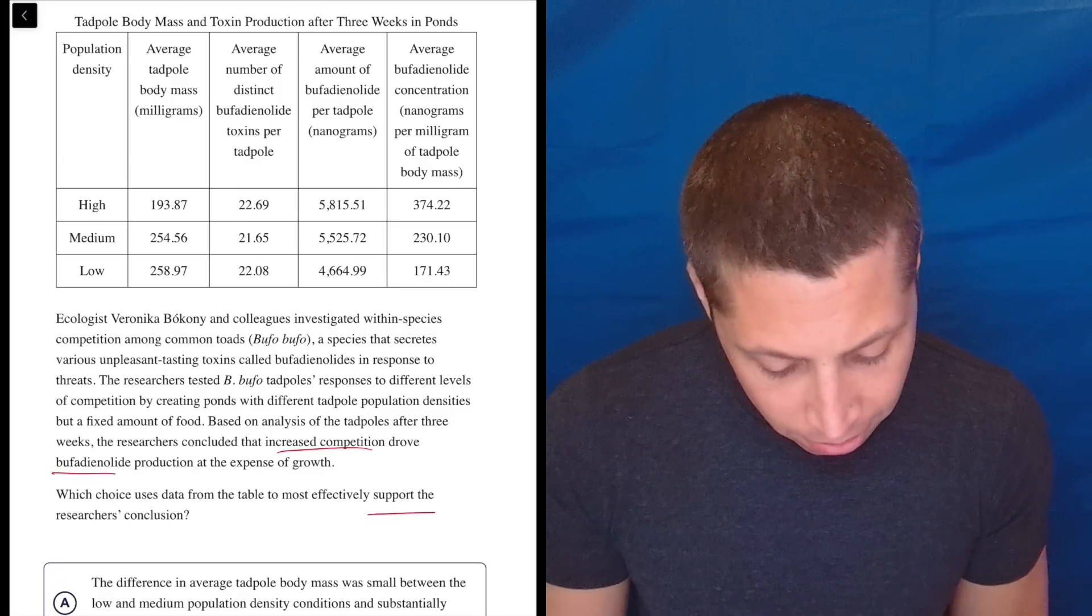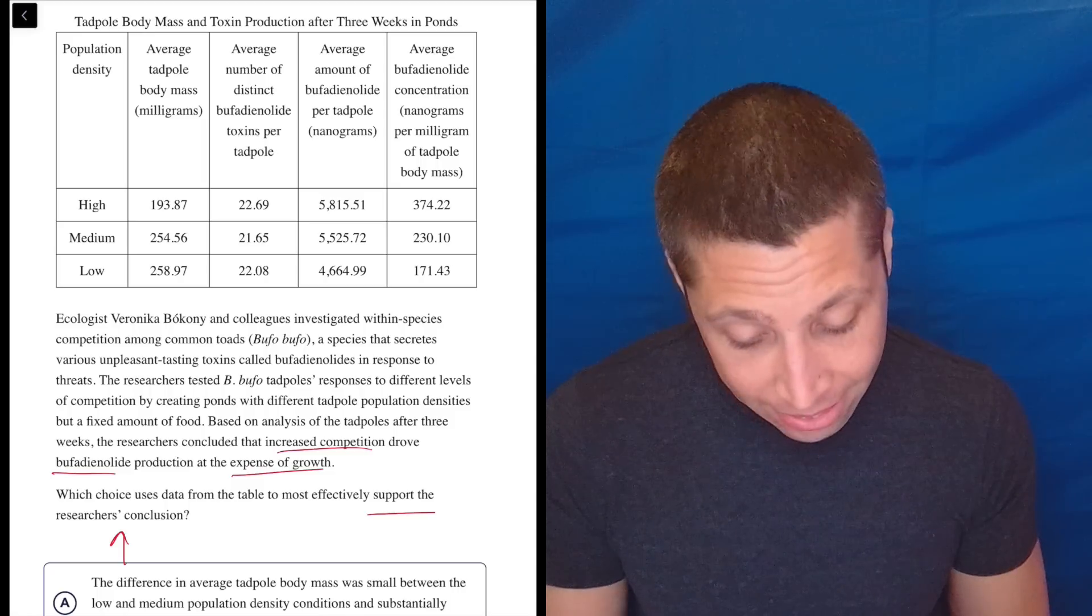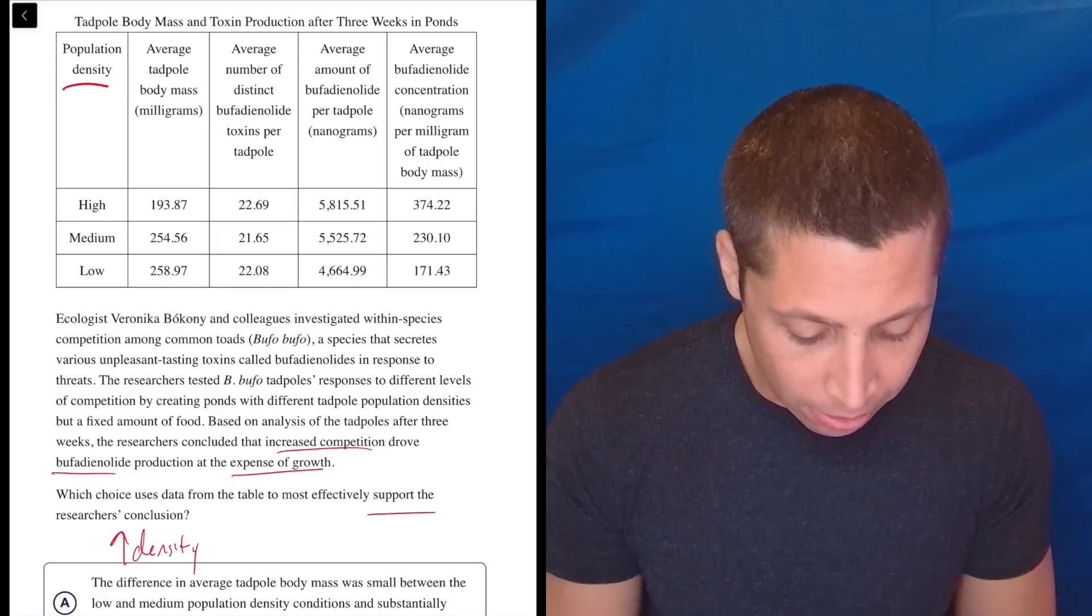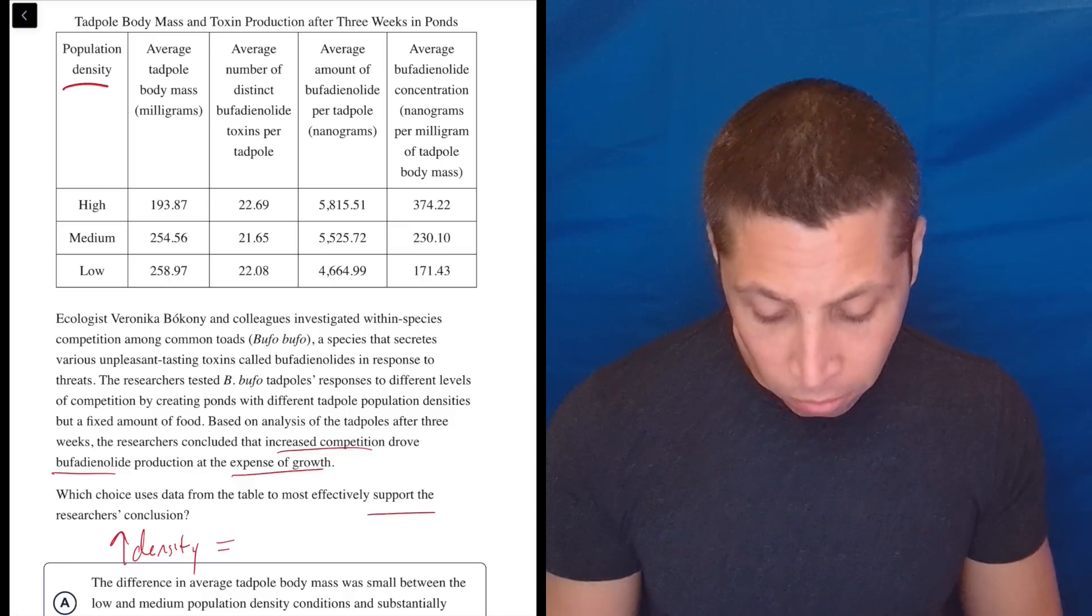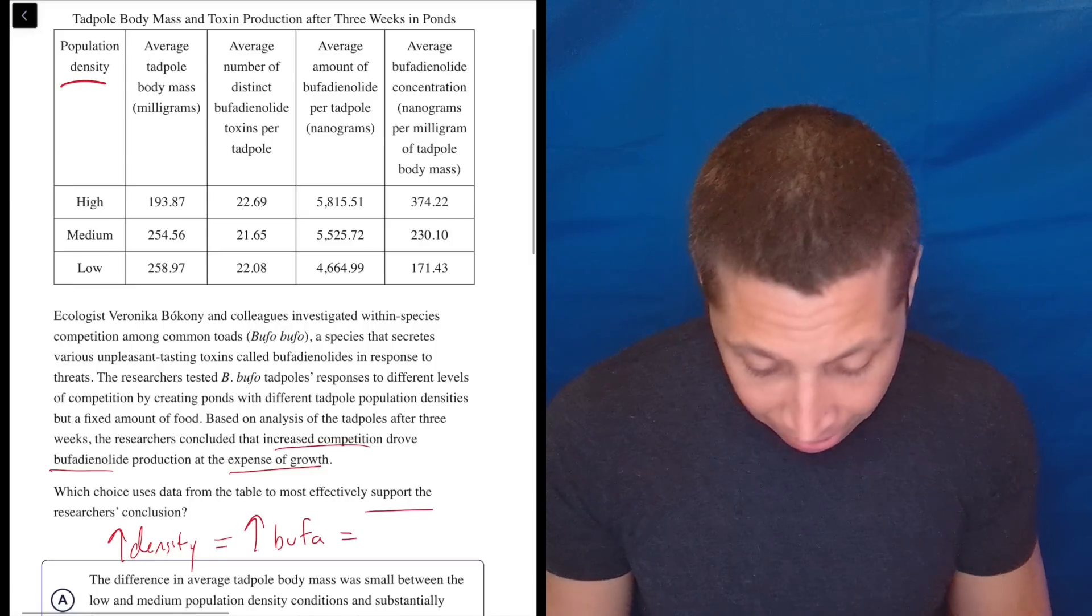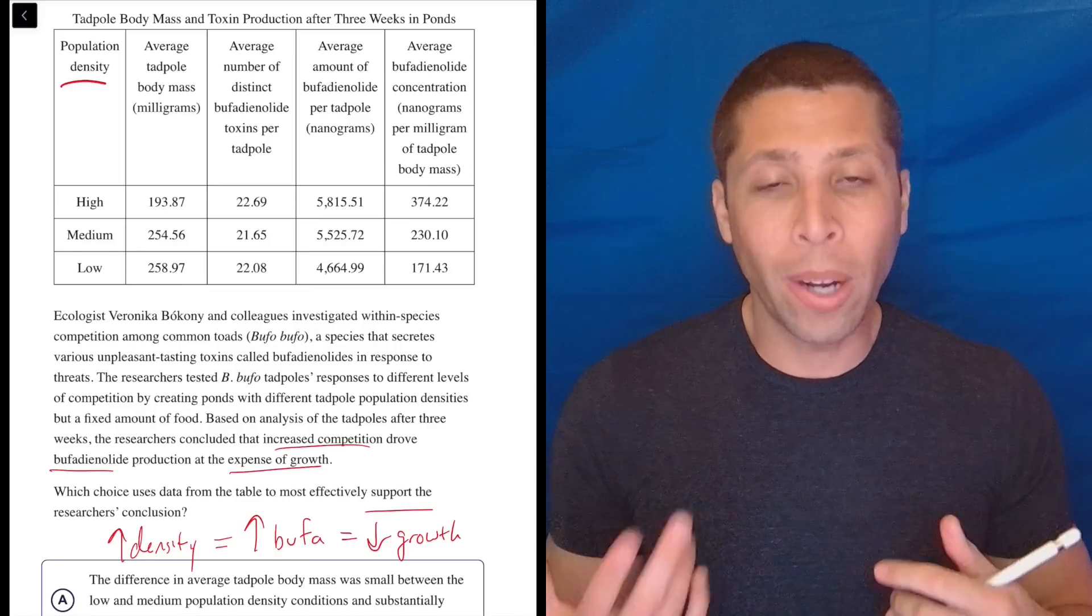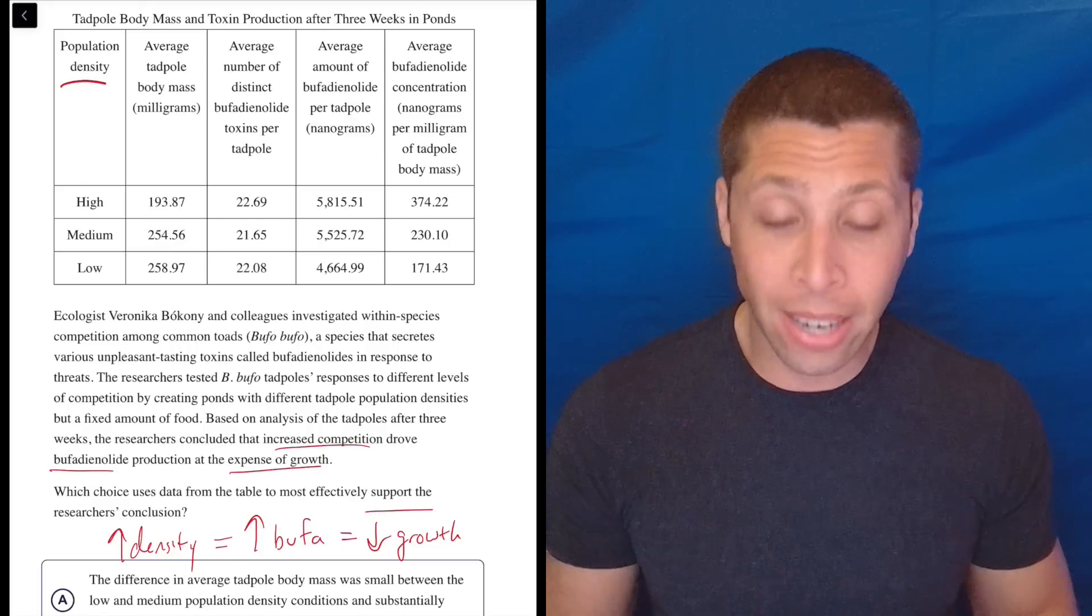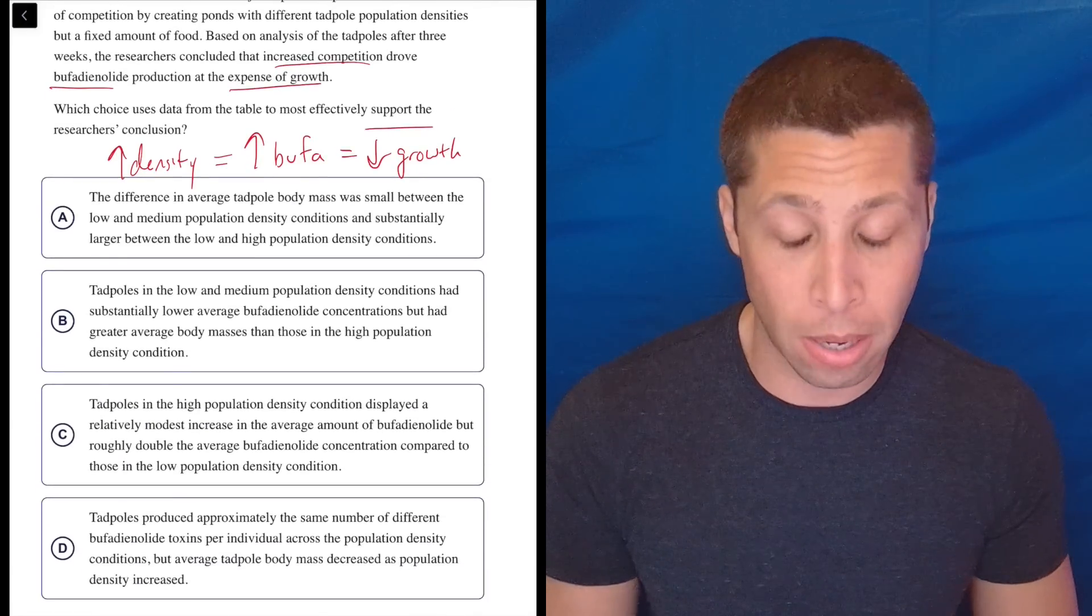So this is—you can easily convert this into some easier ways to understand things, right? So increased competition, right? So the competition is what? Probably that's the density because that's the thing that they're changing. That's the thing they're talking about is changing here. So increased density leads to two things, right? It leads to drove bufa production. So that means it's increasing. If you drive something, you cause it to happen. So increased density means increased bufa and at the expense of growth, so less growth. So notice they didn't quite use increase and decrease, but we should understand through the strong words here that that's what they're doing. They're setting us up for those things. So that is the relationship that they're asking for. We want to support this conclusion, so let's now see what the choices say, and then we can compare it to the chart if needed.